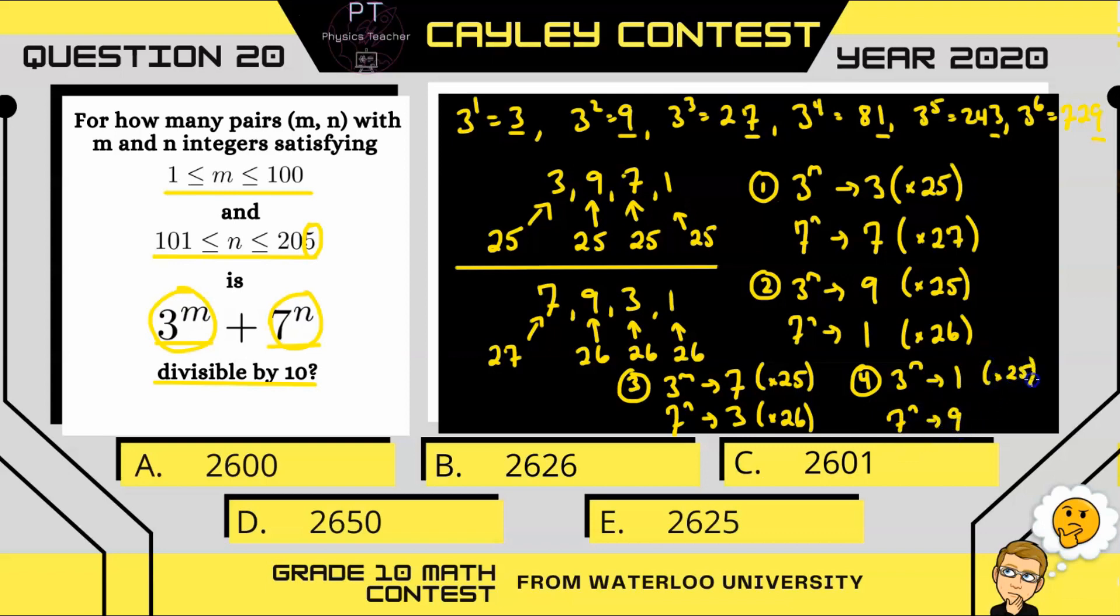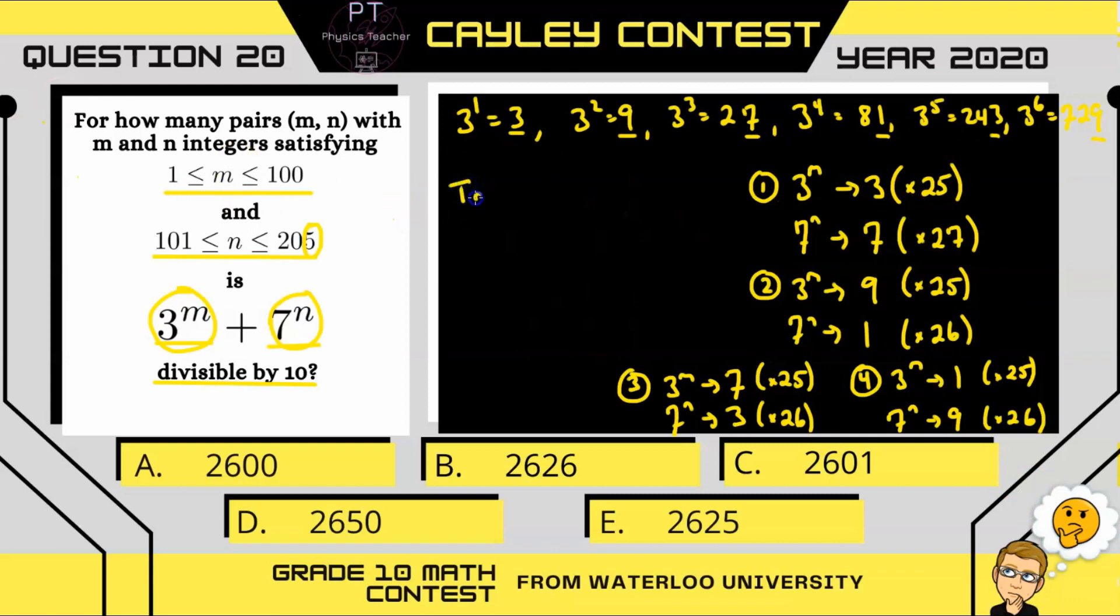Again, 25 and 26 options. All right, so if we look at the total number of possibilities that we're going to have here. For case 1, we can mix and match 25 with 27 numbers to get that ones digit of 0. And we can do the same by mixing and matching case 2, 3, and 4, which are all 25 times 26. So we'll have three combinations of this 25 times 26, with the total combinations then of 2,625. So our answer is E.